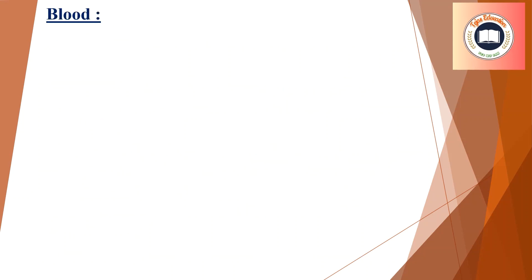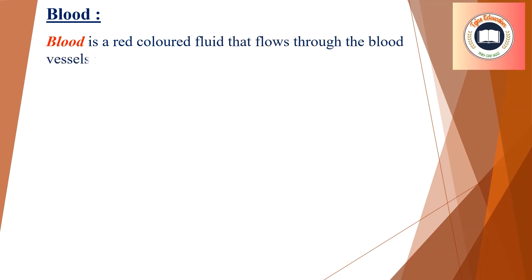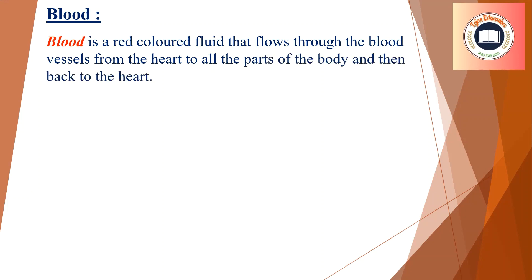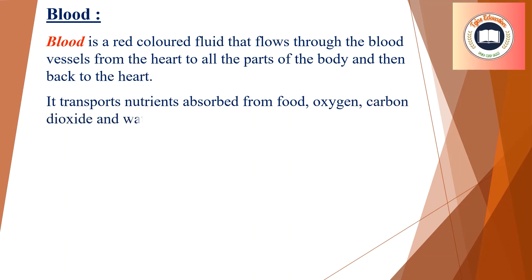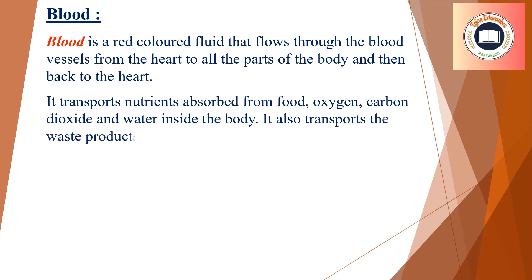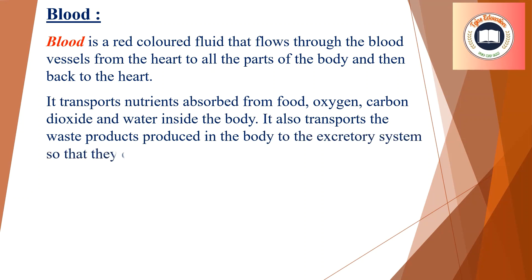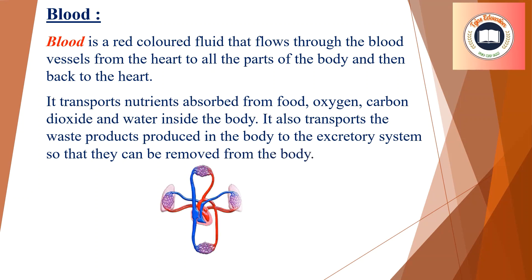Blood is a red-colored fluid that flows through the blood vessels from the heart to all parts of the body and then back to the heart. It transports nutrients absorbed from food, oxygen, carbon dioxide, and water inside the body. It also transports the waste products produced in the body to the excretory system so that they can be removed from the body.